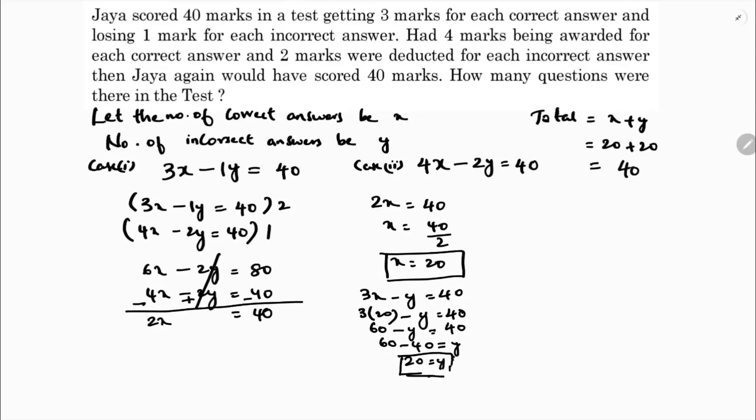Now if you want, we can check the verification. The total number of questions problem is done here, that is 40. First case, 3 marks for correct answers minus 1 mark for wrong answer. Number of correct answers are 20, wrong answer is also 20. 3 into 20 is 60 minus 20 which is 40.